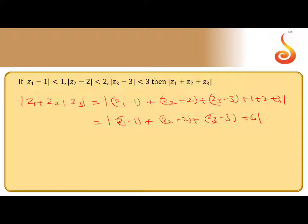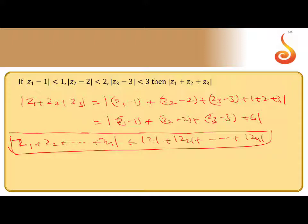We have one property: modulus of z1 plus z2 and so on, zn, is less than or equal to mod z1 plus mod z2 and so on. Using this property, this is less than modulus of z1 minus 1, modulus of z2 minus 2, modulus of z3 minus 3 plus 6.